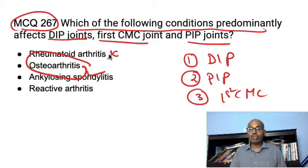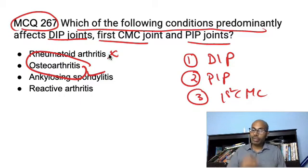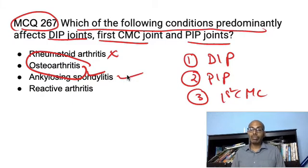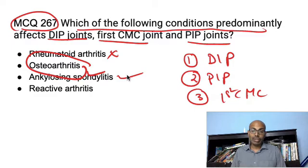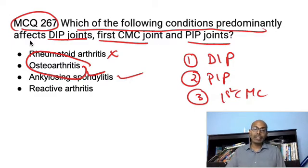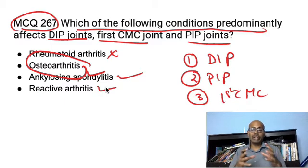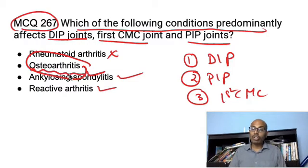It is not rheumatoid arthritis because MCP, wrist, and elbow are more predominantly involved there. Not ankylosing spondylitis because in ankylosing spondylitis the back and hips are involved, and most importantly sacroiliitis is involved — sacroiliitis must be present for an ankylosing spondylitis diagnosis. Reactive or Reiter's arthritis is not the answer because it can have generalized arthritis and this specific pattern cannot happen. So the answer is very clearly osteoarthritis.